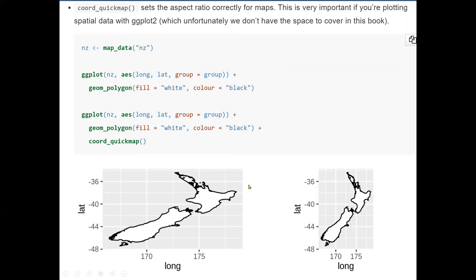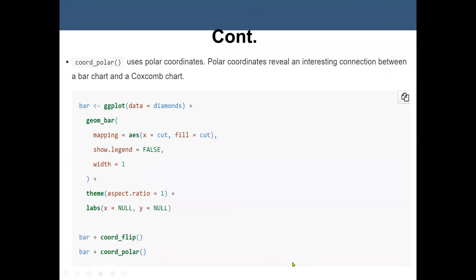And we plot the polygon. We fill in with white. The color stays black. But this time we set our quickmap, coord_quickmap. So we can see how you set the aspect ratio. So here it's very wide and long. We have 170 to 175. It's the same graph. But we can see that it reduces the aspect ratio.